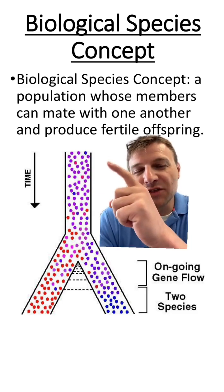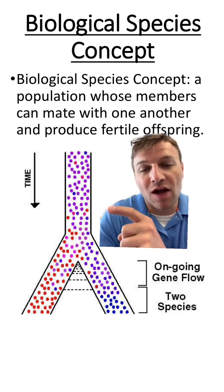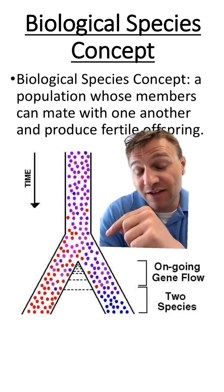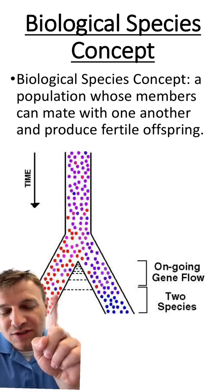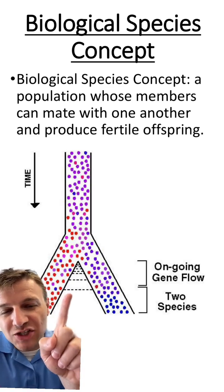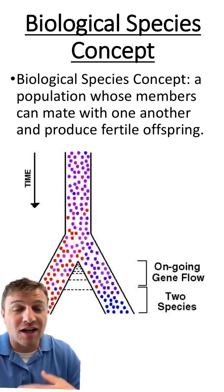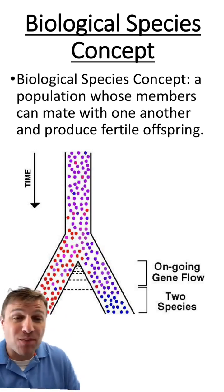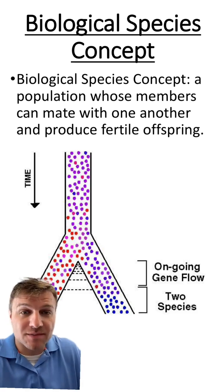You can see this species is going to interbreed with each other and produce fertile offspring until this speciation event. Now, there might be some breeding between these two groups initially, but at a certain point they're not going to be able to produce fertile offspring. At this point, we call them two different species.